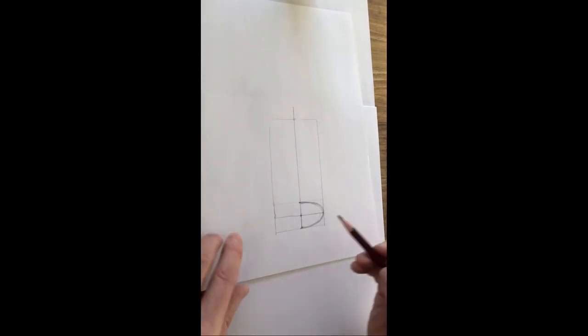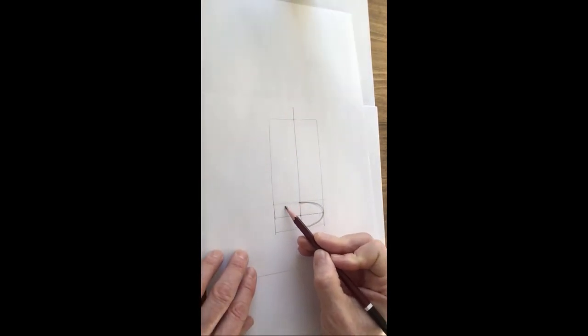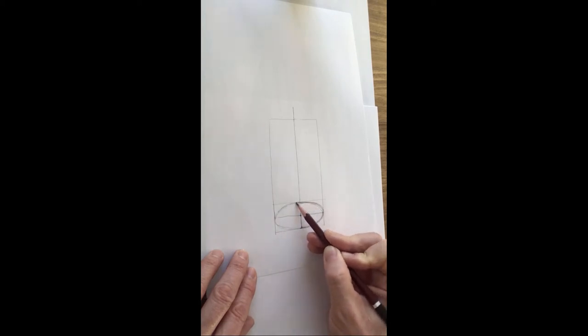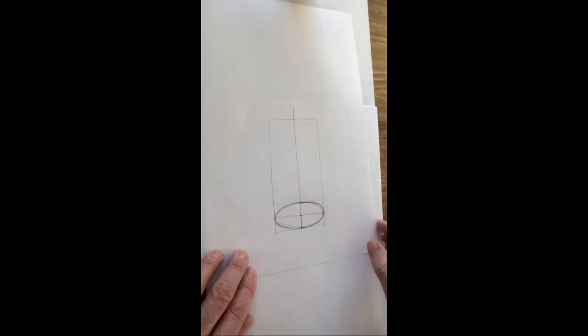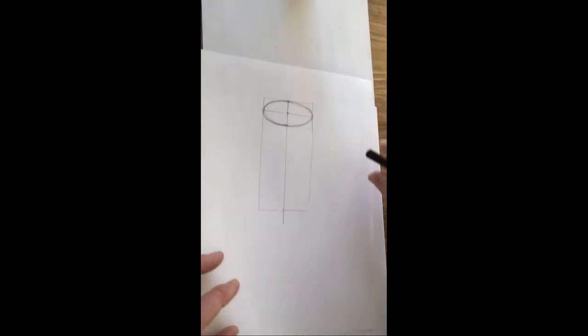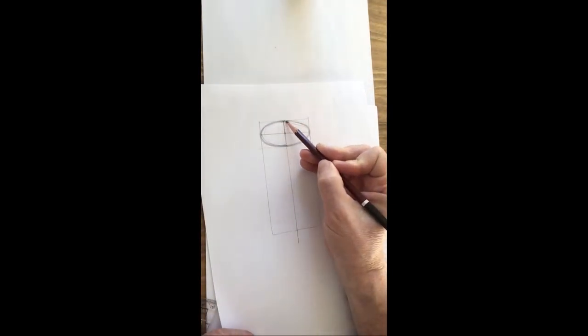Then I'm going to turn it round and do the same again. First arc and second arc. You'll notice I'm pressing very lightly on my pencil, so there is my first ellipse for the top of my cylinder.